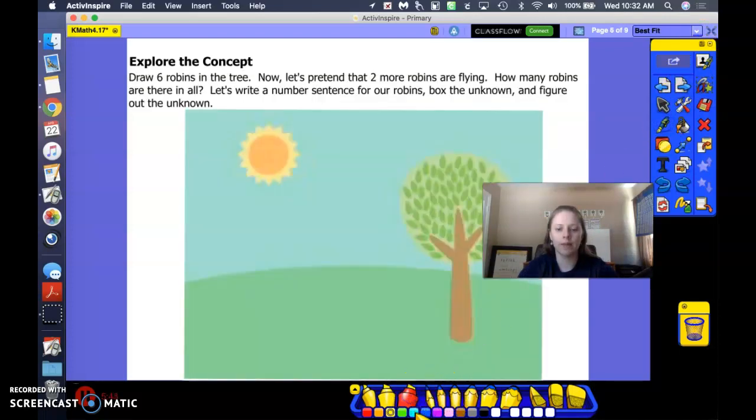We're going to do some robins. I'm going to get out my blue marker. Again, we're going to draw some circles to represent these birds because it's math class. So let's pretend that there are six robins in the tree. 1, 2, 3, 4, 5, 6. 2 more robins were flying. How many robins are there all together? Let's start with how many were in the tree. Count them up. 6.